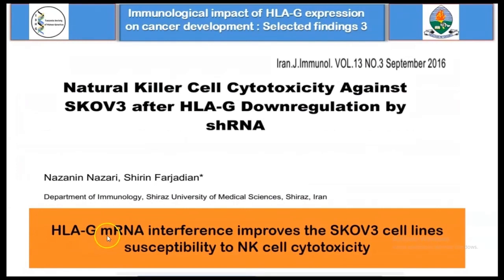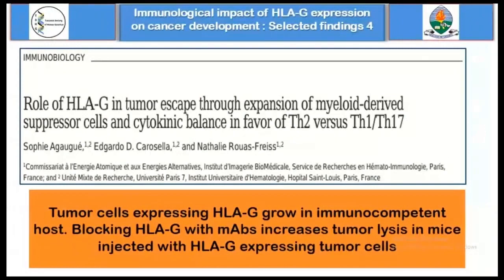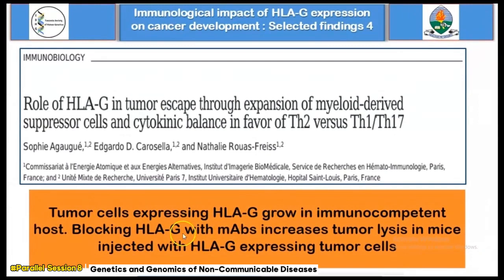The researchers also found that downregulating HLA-G expression through mRNA interference using short hairpin RNA improved the susceptibility of those cells to natural killer cell cytotoxicity. The study also shows that HLA-G expression allows tumor cells to grow in immunocompetent hosts, and when HLA-G was blocked with monoclonal antibodies, the injected tumor cells were more susceptible to lysis in host mice.